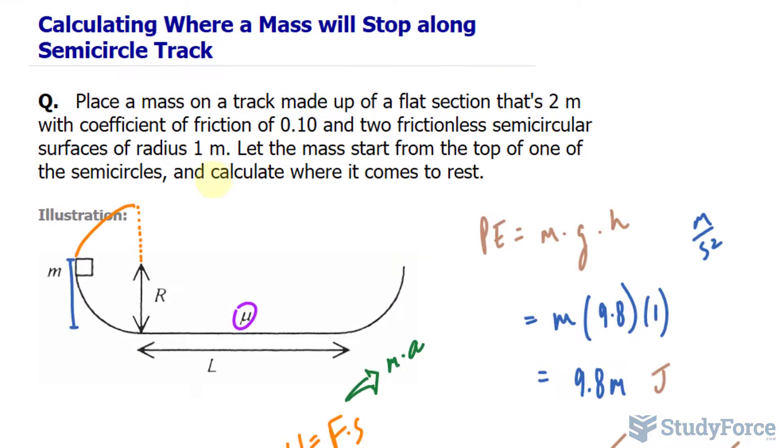So we're expected to calculate where it comes to rest. Using the energy that it holds being up here, it will come to rest in 10 meters. So, 1 round, a second round, 3 rounds, 4 rounds, and then 5 rounds. Therefore, the mass crosses the friction area 5 times and ends up at the edge of the friction surface opposite from where it started.